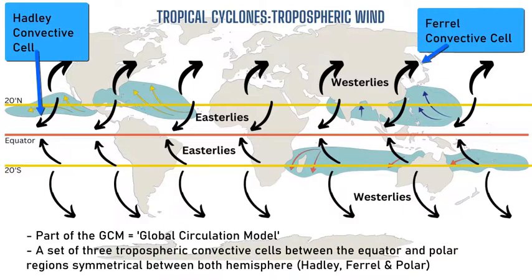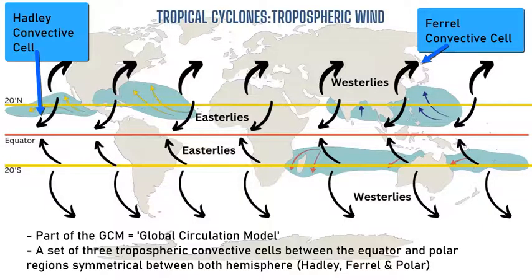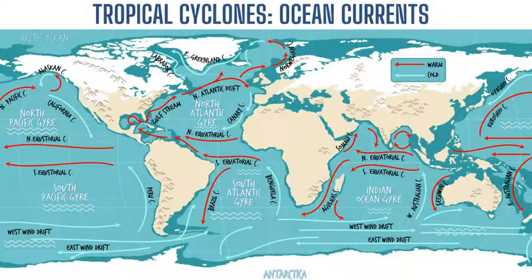We can add in our global circulation model, whereby we have the Hadley cell on either side of the equator, the formation of the easterlies or trade winds, and then the westerlies, which are the surface winds of the Ferrel cell between 30 and 60 degrees north and south of the equator. These two prevailing wind directions are named based on where the wind comes from, and their curvature is a result of air deflection caused by the Coriolis effect and the rotation of the Earth.